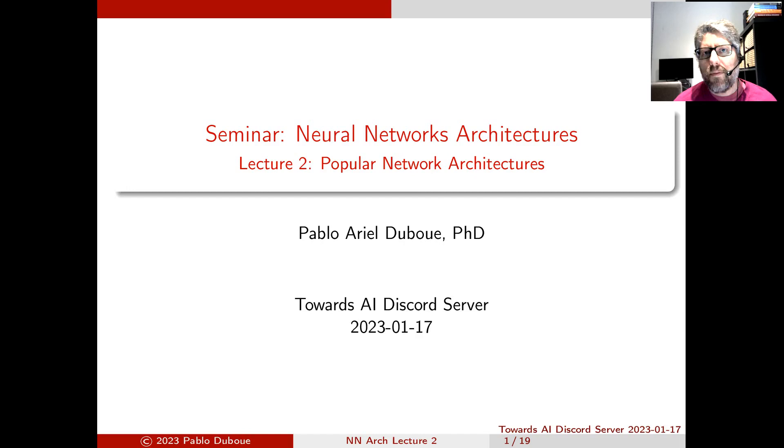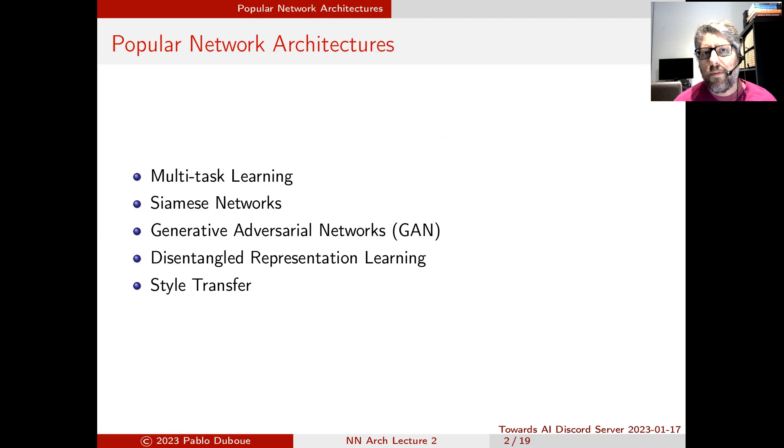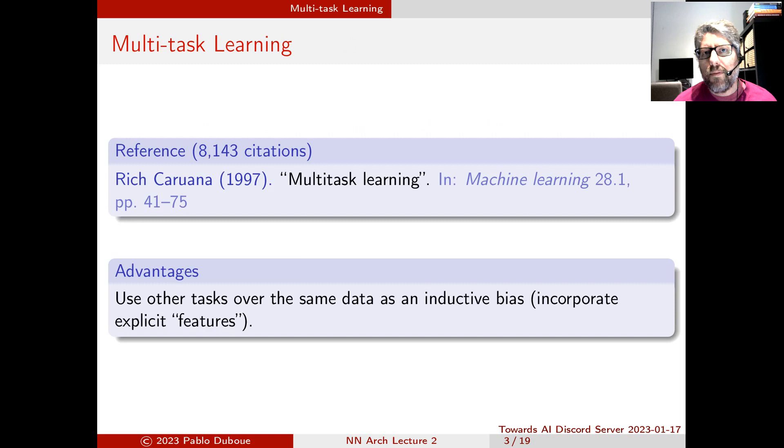Welcome to the second lecture for the Seminar on Neural Network Architectures at the TORS.AI Discord server. Today we're going to see some popular network architectures that you can use on your work right away and are proven to be quite useful. We'll cover multi-task learning, Siamese networks, generative adversarial networks also known as GANs, and disentangled representation learning. Then we'll talk about style transfer and see the initial neural style transfer paper, which bridges to next lecture.